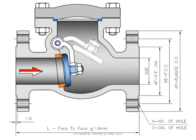This is one example of how a non-return valve works. These valves are used to prevent the flow of liquid backward in a pipeline, if that direction of flow is not desired.